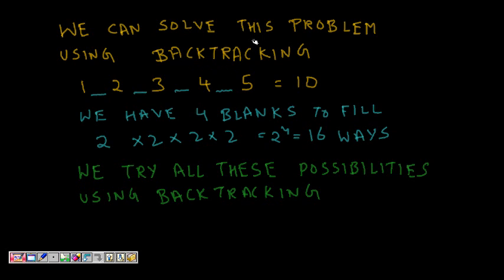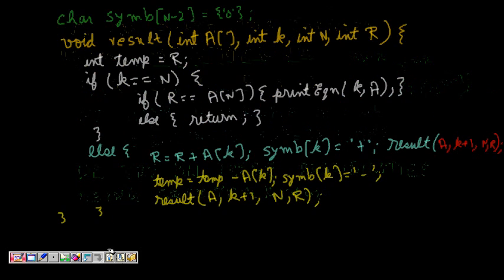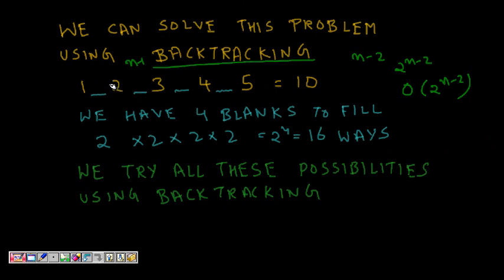We solve this using backtracking. We have n minus 1 numbers and n minus 2 blanks, which can be filled in 2^(n-2) ways. We check all these ways exhaustively — the complexity is high but it gives us all valid ways where LHS equals RHS. We fill positions with plus and minus signs, trying both at each step.